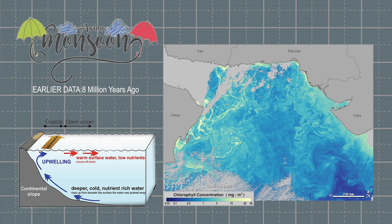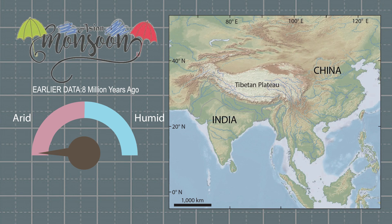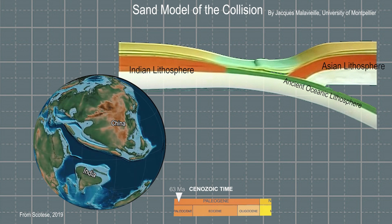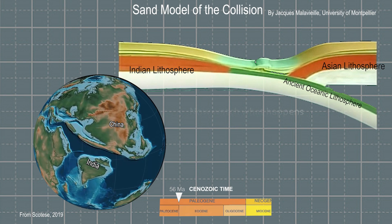More recently, evidence has come to light of an earlier change in climate that may have been caused by an intensifying monsoon. This involves a switch from arid to humid conditions in southwest China and Myanmar that began around 36 million years ago. In a nutshell, we're still trying to figure out when and how the modern Asian monsoon was established.